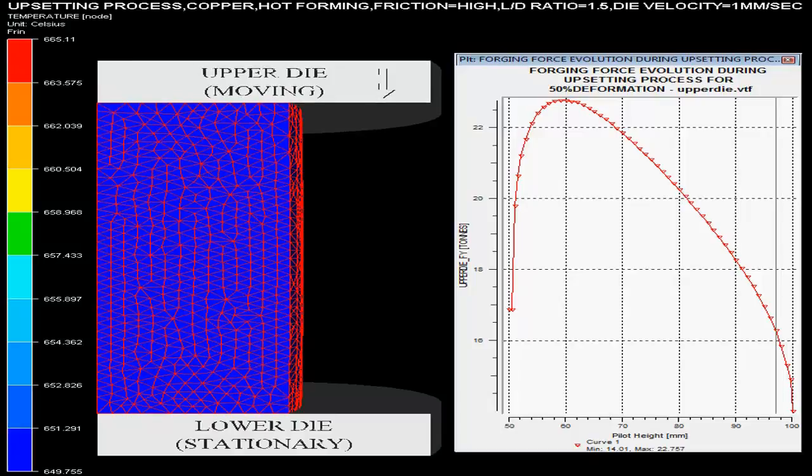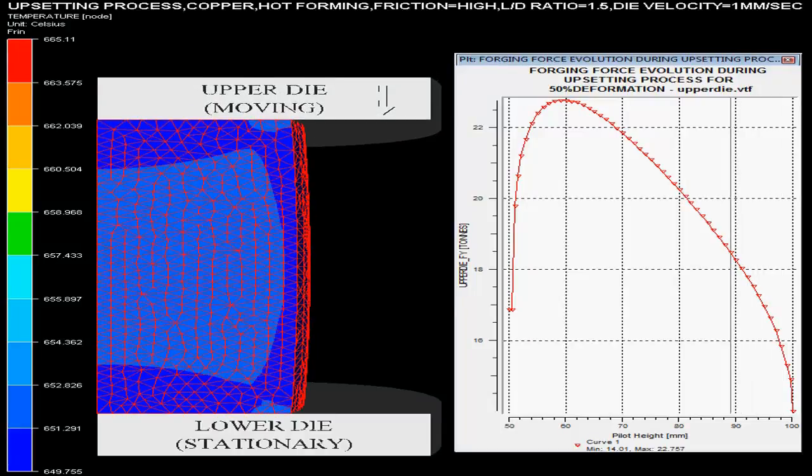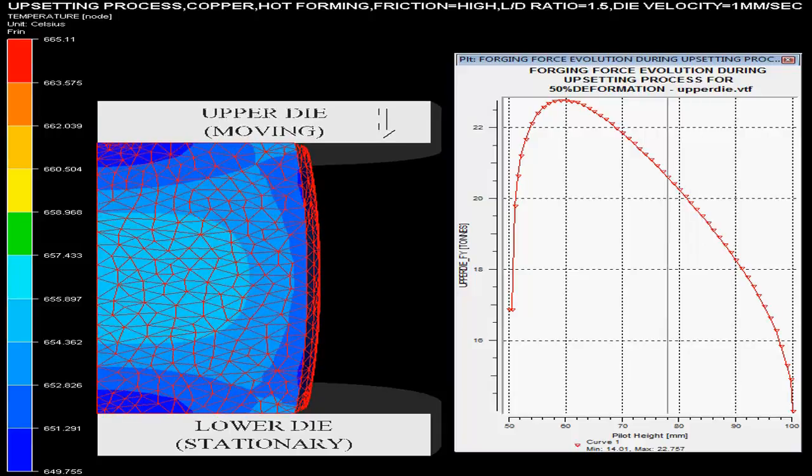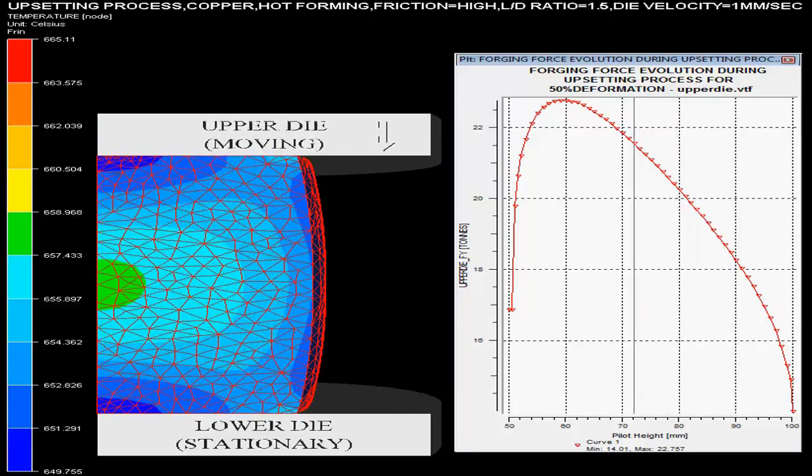On the right hand side, one can see the graph of forging force on the upper die versus pilot height, showing the forging force evolution during the upsetting process for 50% deformation.